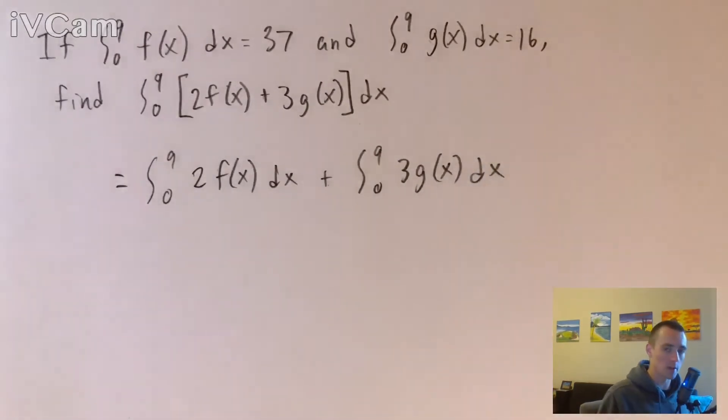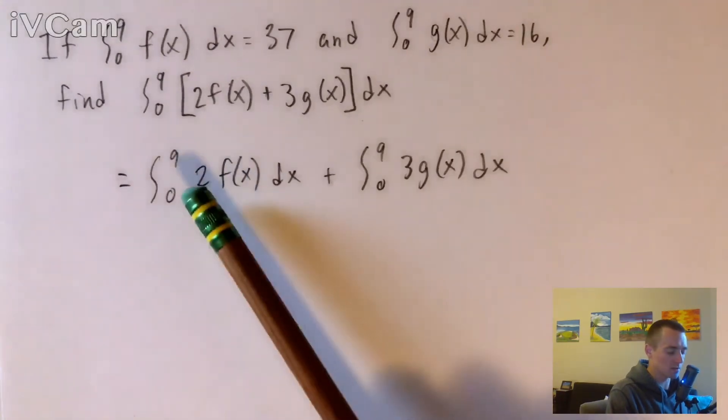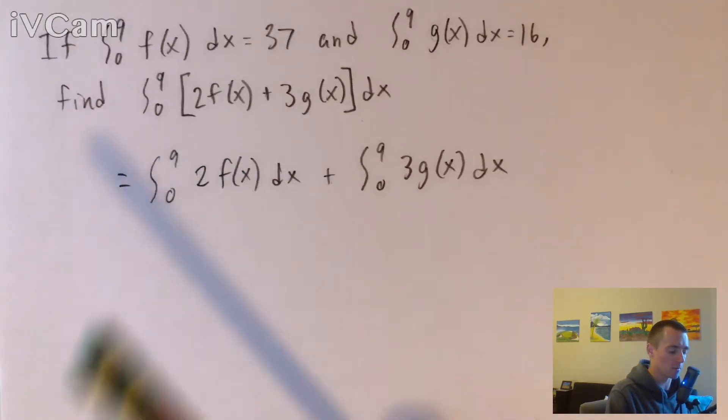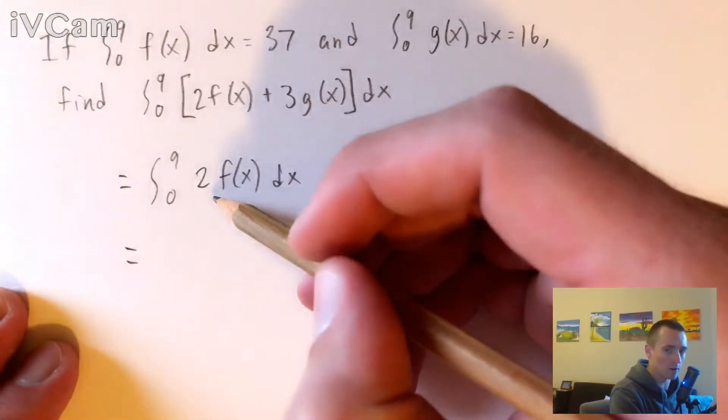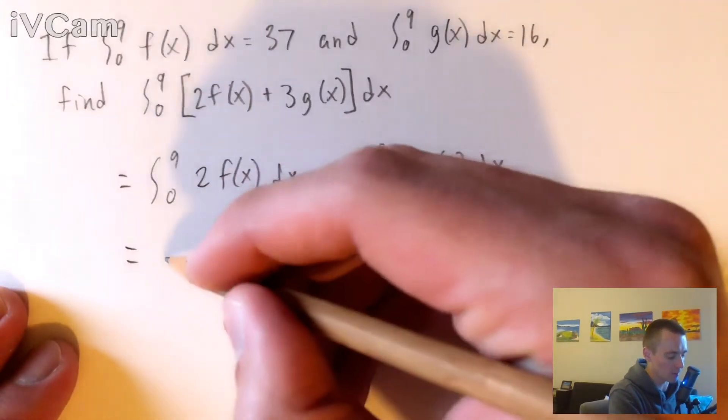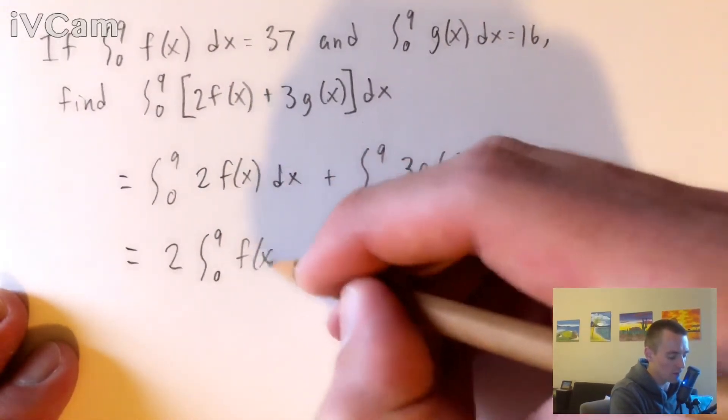So then what we can do is apply another one of those properties that says if we have an integral of a constant times some function, we can basically just pull the constant out of our integral. So doing that, we're gonna be able to do that to actually both of these integrals here. We can pull our constant two out from this one. So we're gonna get two times the integral from zero to nine of f(x) dx.